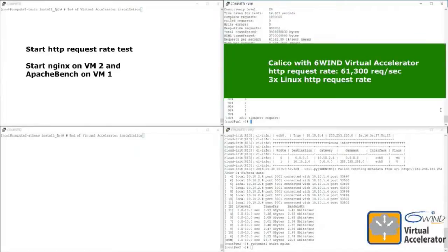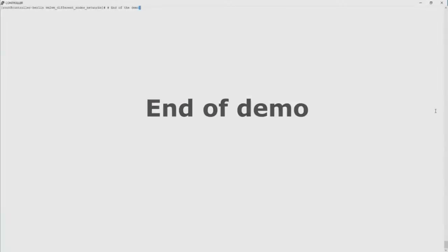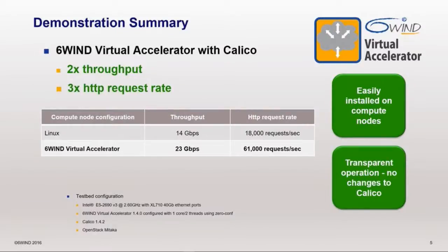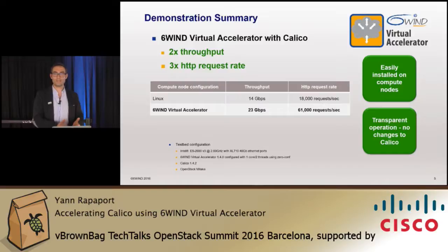That's the end of this basic demo. As a summary: we have demonstrated an OpenStack Mitaka environment configured to use Calico L3 networking for connectivity between VMs, and we have used Virtual Accelerator to accelerate the hypervisor performance, comparing standard Linux versus Linux running Virtual Accelerator.